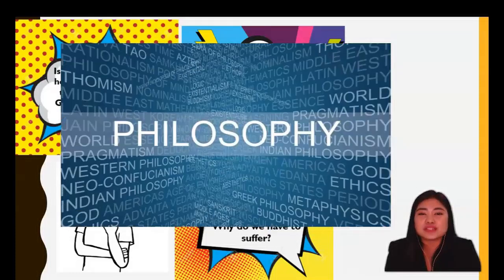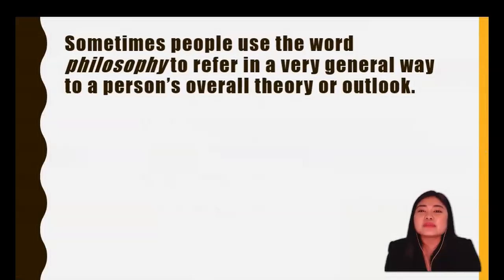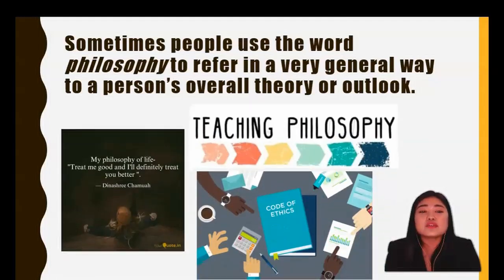So what then is philosophy? Sometimes people use the word philosophy to refer in a very general way to a person's overall theory or outlook. For example, a person's philosophy of life is his or her general outlook, or a teacher's philosophy in teaching. Used in this way, the term philosophy is a kind of synonym for outlook or general viewpoint.